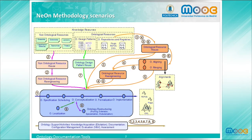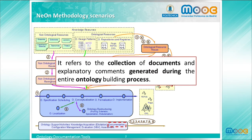According to the new methodology, ontology documentation refers to the collection of documents and explanatory comments generated during the entire ontology building process. These documents can be external, such as the ontology requirement specification document, sources used for acquiring knowledge, or ontology conceptualization documents, among others.